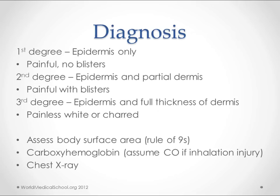First degree just involves the epidermis — you can get a first degree from the sun. They're generally pretty painful, but they don't give you blisters. A second degree includes a little bit of the dermis as well, and that's why you get blisters — because of the involvement of that epidermal-dermal layer. Third degree is when you go through the dermis all the way, sometimes into the underlying tissues like the muscles, and you get painless, white, or charred areas. The reason they're painless is because the nerves are burned.